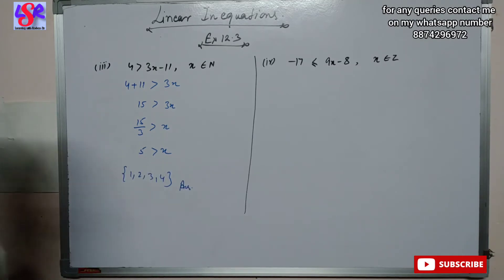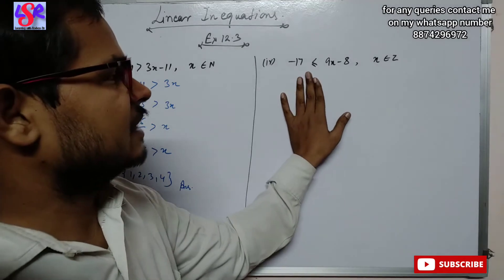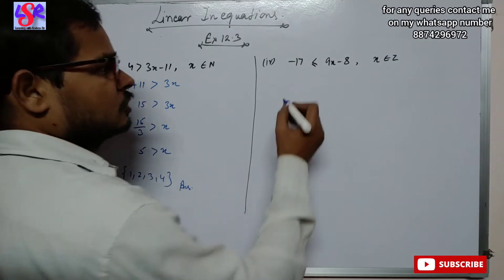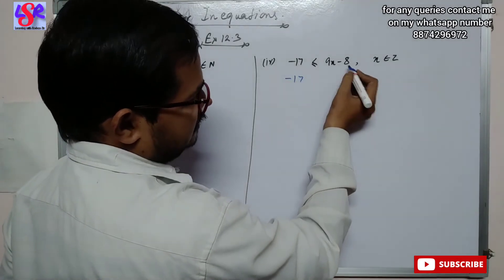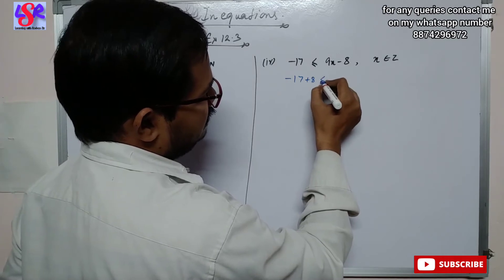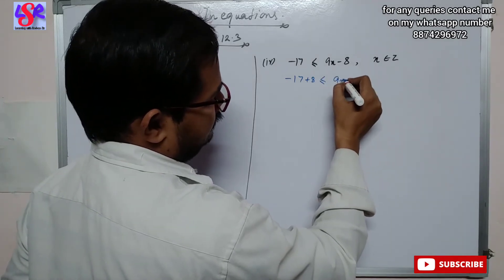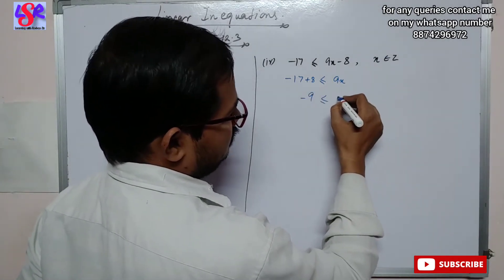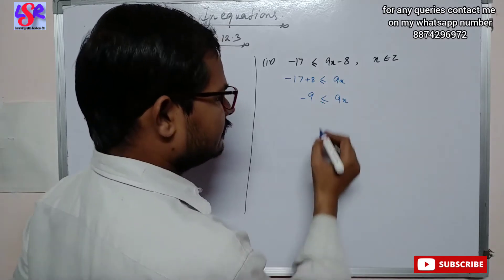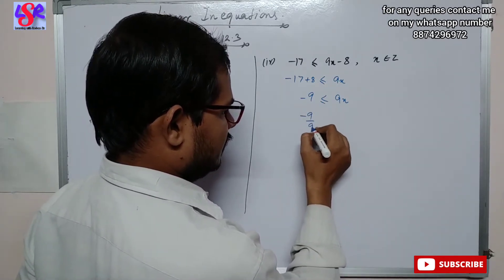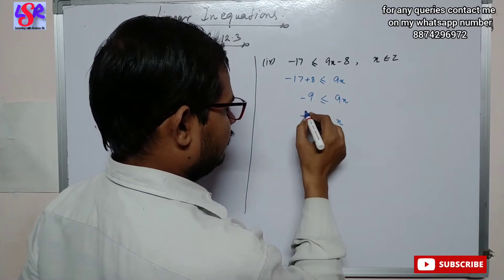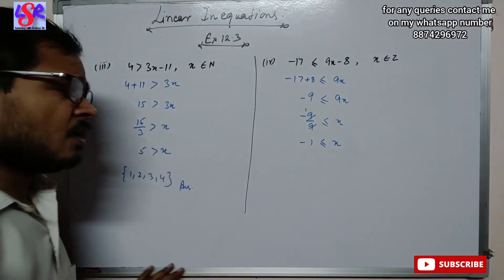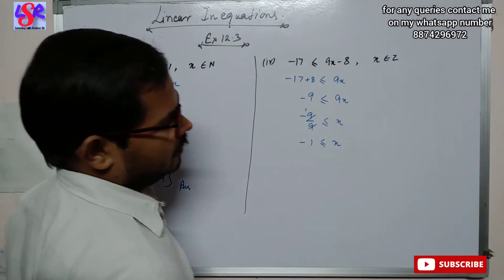Now we will be doing the fourth part of this question. Here we have minus 17 is less than or equal to 9x minus 8 where x is the element of integer. We solve: minus 17, bringing minus 8 to the other side as plus 8, giving minus 17 plus 8 is less than or equal to 9x. That is minus 9 is less than or equal to 9x, so minus 1 is less than or equal to x.